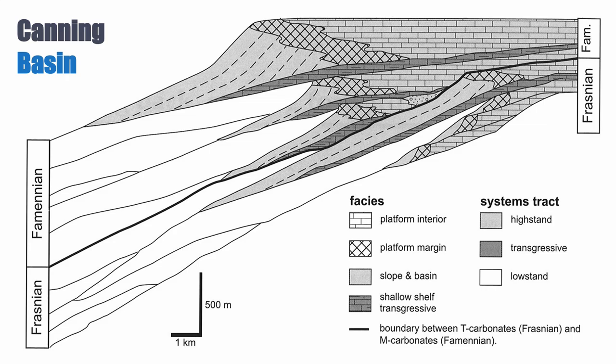So the M factory and the T factory in terms of response to sea level changes are very similar. So much so that if you look at the Canning Basin in Australia, which dates from the Frasnian to Famennian, you see that we have multiple systems here that comprise a reef — that's the hashed texture there. So the platform margin is a reef, but also a platform and a slope. And here you have a mix of T and M factory.